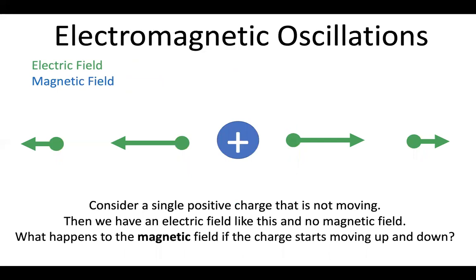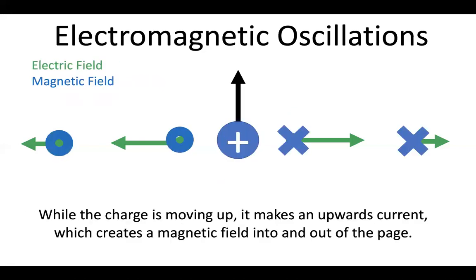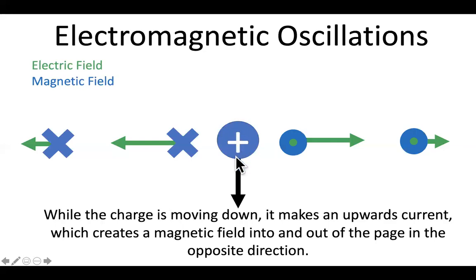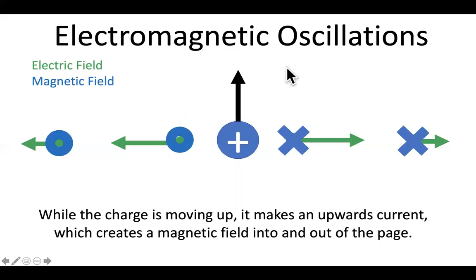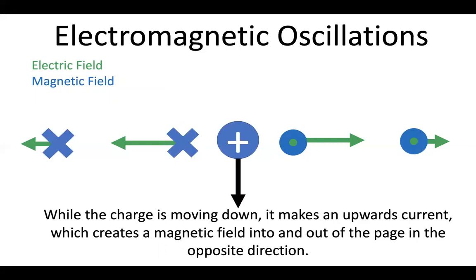What about the magnetic field? When the charge is stationary, there's no magnetic field. But as the charge starts to oscillate — move up and down — that's a current, and that will make a magnetic field. So when the charge is moving up, we have basically a current running up, at least for that moment. And if you use the right-hand rule, you can see that will produce a magnetic field that's into the page on this side and out of the page on this side. When the charge is moving down, it produces a current that is down, which will produce the opposite pattern of magnetic field. So as the charge moves up and down, you will get oscillations in the strength and direction of the magnetic field.